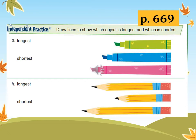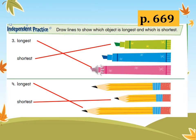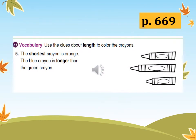Are you done? Good job. Let's see if your answers are correct. Do you have the same answers as my answers? Great job — now you are able to do it. Let's do number five: use the clues about length to color the crayons. The shortest crayon is orange — can you color the shortest crayon orange? Next, the blue crayon is longer than the green crayon. Which is the green crayon and which is the blue crayon?